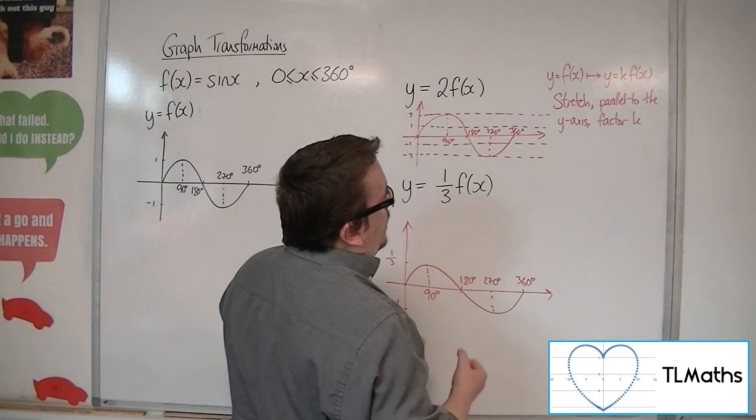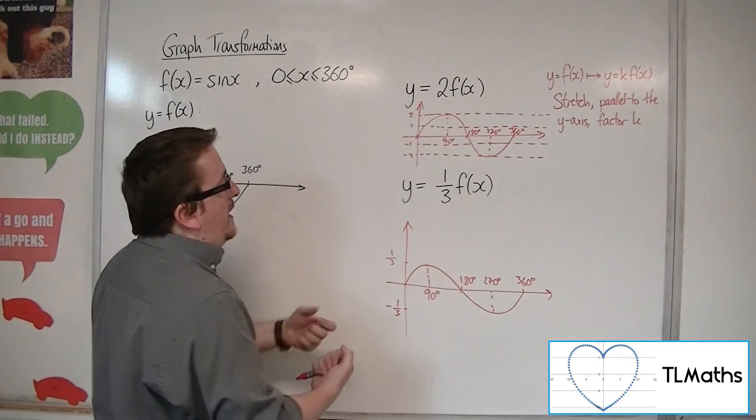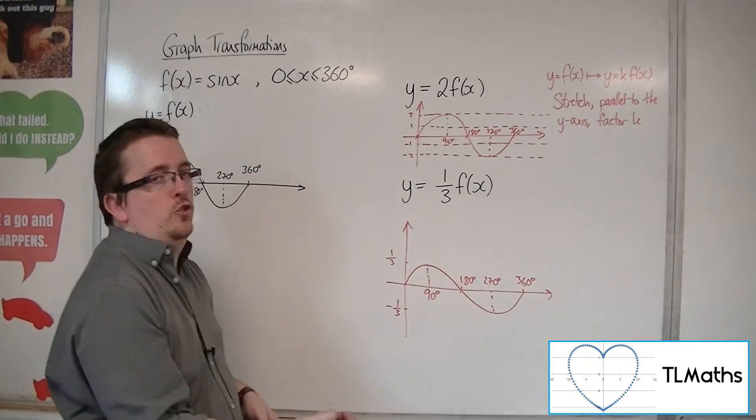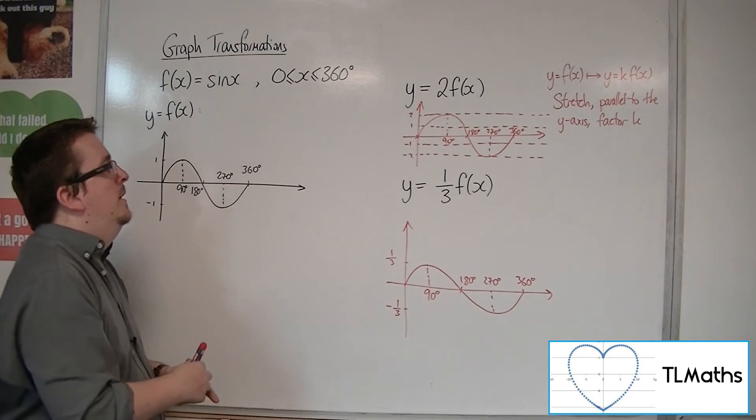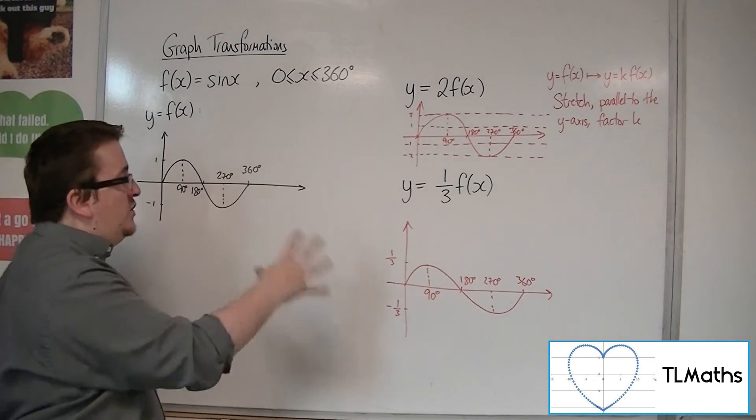If you have a 3 in front of the f(x), then all of the y coordinates have tripled. And that's how we can deal with that type of transformation.